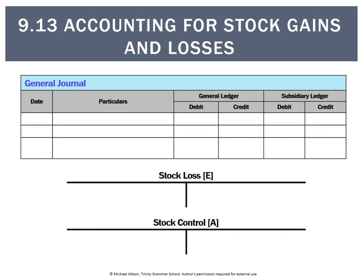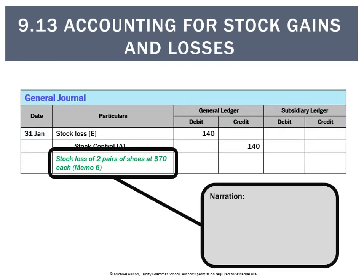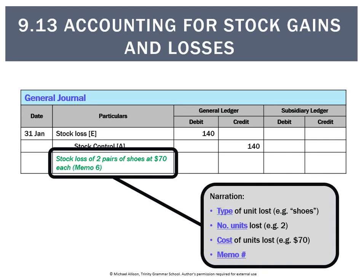This will be recorded in the general journal. We'll have a debit to stock loss because it's an expense — expenses go on the debit side — and a credit to stock control because an asset is decreasing. We post the entry: debit to stock loss, credit to stock control. For narrations, make sure to use 'stock control' and not just 'stock.' The memo number is non-negotiable, and we want at least two of the following three details: the type of unit (in this case, shoe), the number of units (in this case, 2), and the cost of those units (in this case, $70). Anything short of that, you run the risk of not getting the mark for a narration.